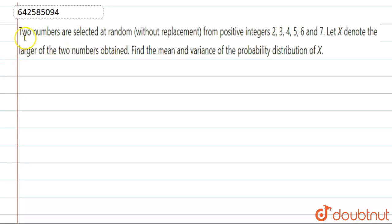In this question, two numbers are selected at random without replacement from the positive integers 2, 3, 4, 5, 6, 7. X denotes the larger number of two numbers obtained. Find the mean and variance of the probability distribution X.